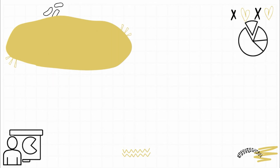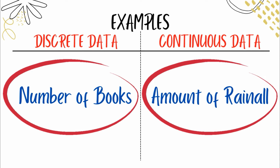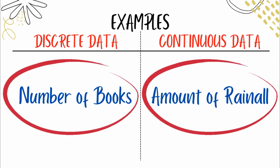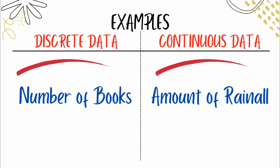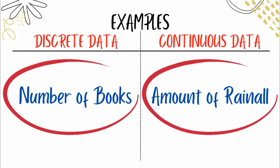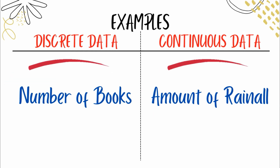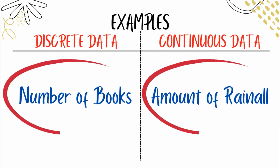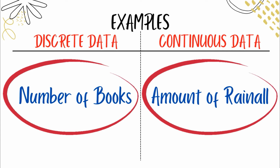Let's have examples to understand. An example of discrete data is the number of books — we can count them with our fingers. But the amount of rainfall — how much rain fell — we cannot count that. It's a continuous data.